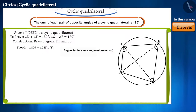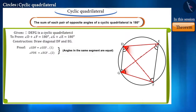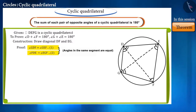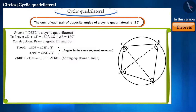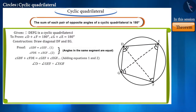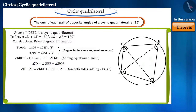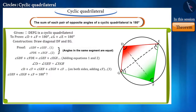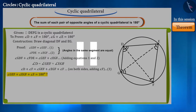Similarly, angles FDE and EGF are also equal, being angles in the same segment. Let's call these equations one and two, and add them together. By joining angle GDF and angle FDE, we get angle D. If we add angle F to both sides of this equation, the right side will be 180 degrees. You can think about the reason by pausing the video.